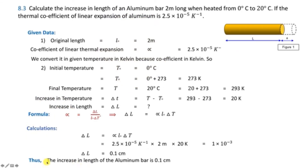Problem 8.3: Calculate the increase in length of an aluminum bar 2 meters long when heated from 0°C to 20°C. The temperature difference will be needed. The length of the bar is 2 meters, and the thermal coefficient of linear expansion (alpha) is 2.5 × 10⁻⁵ per Kelvin. Here we have a bar whose original length L is given.